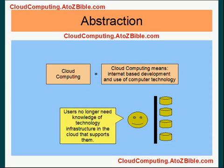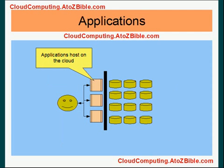These pink boxes are representing the applications hosted on the cloud, and this black line represents the host for the cloud. All these right-hand side symbols are representing the resources available underneath this cloud.